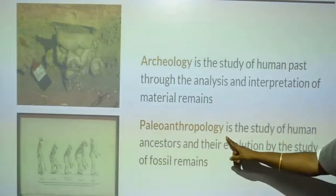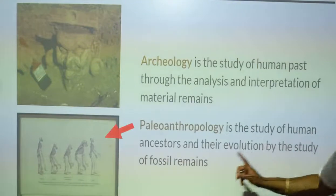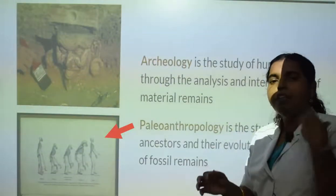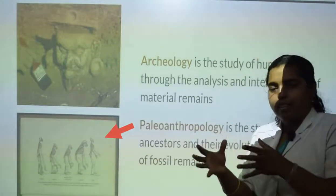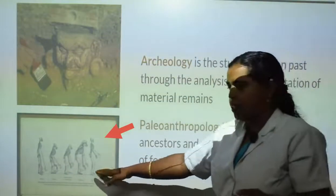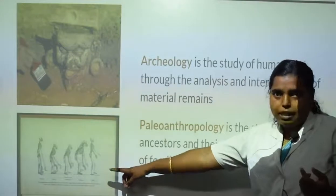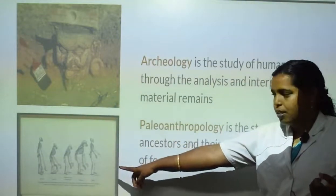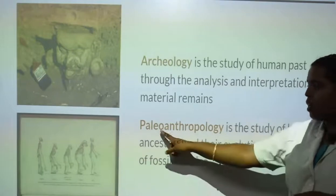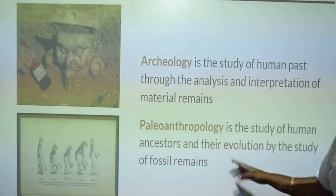Now, paleoanthropology - as seen in the previous slide - is the study of human ancestors and their evolution by the study of fossil remains. Fossil is the remainings of an animal or a human being - body parts, bones, things like that. Now, you all know human beings have evolved from apes, a kind of a monkey. Studying the human remains and fossils is called paleoanthropology, and the person who studies this is a paleoanthropologist.